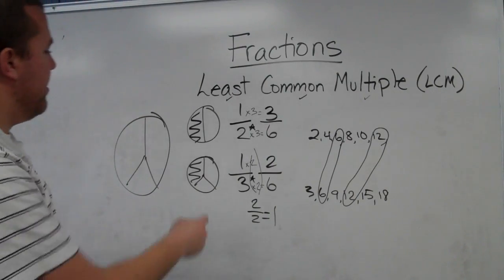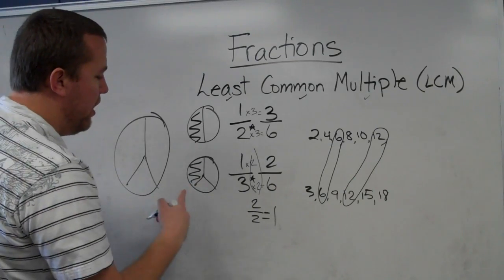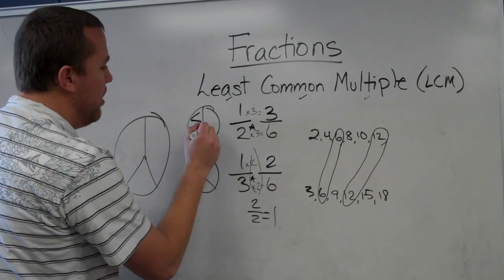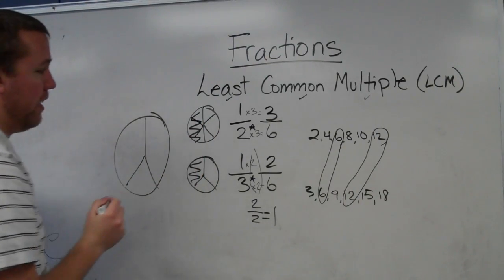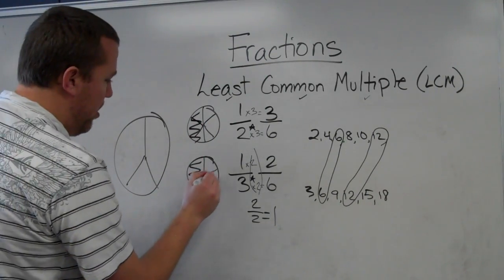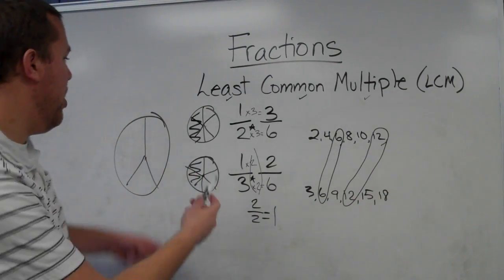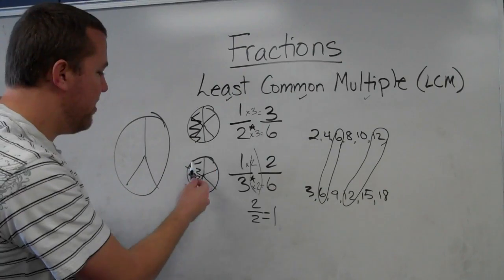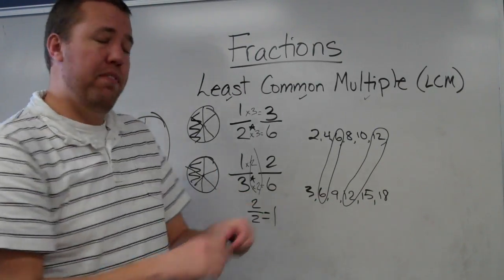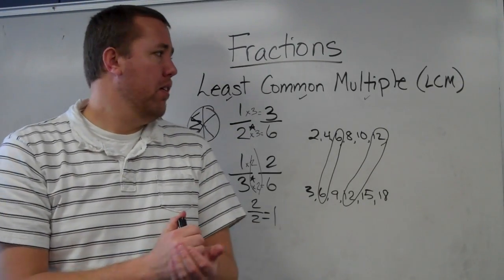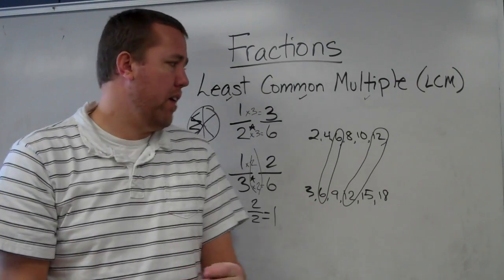So, now, instead of looking like this, one-half versus one-third, now I'm looking at sixths and sixths. I'm just looking at these fractions in a different way. Okay, and now I'm looking, oh, three-sixths is definitely bigger than two-sixths. So, that's what finding the least common multiple does for us. It helps us in comparing fractions.